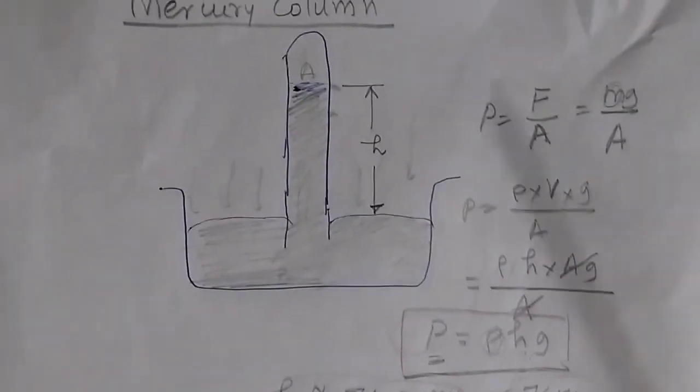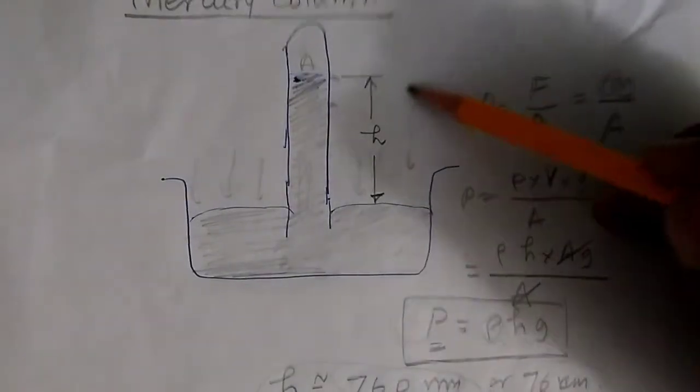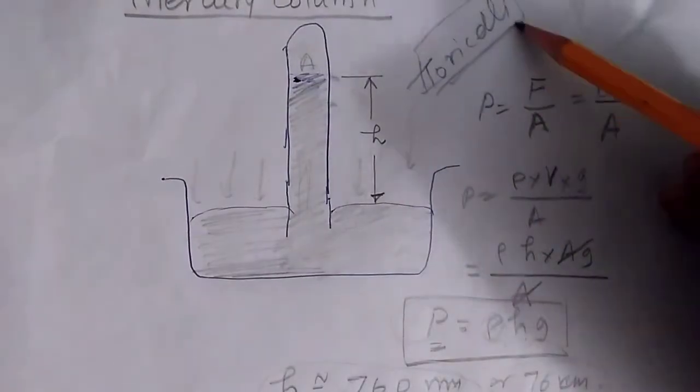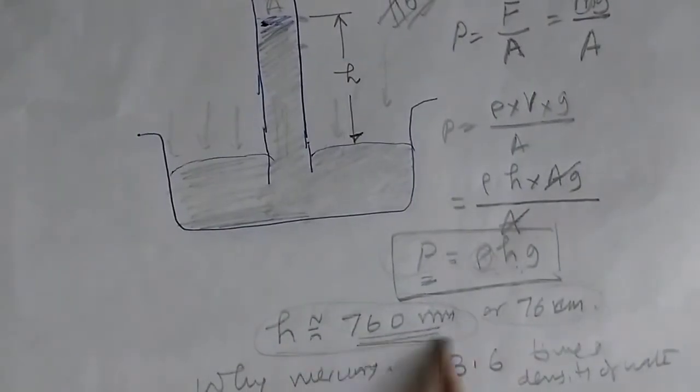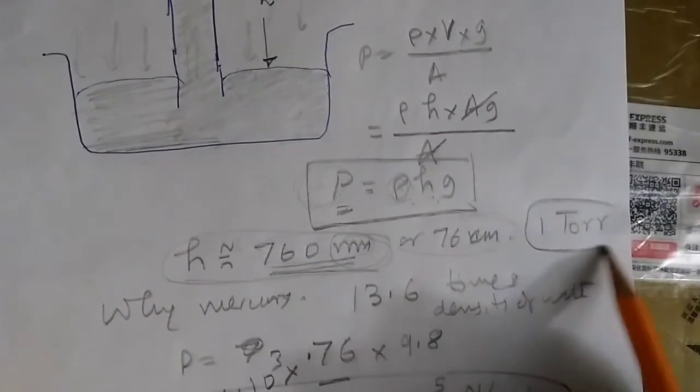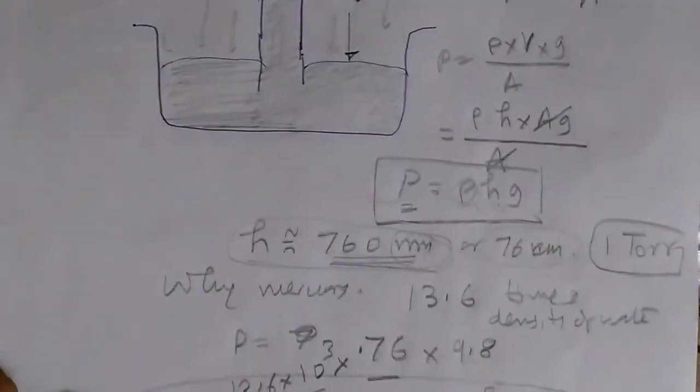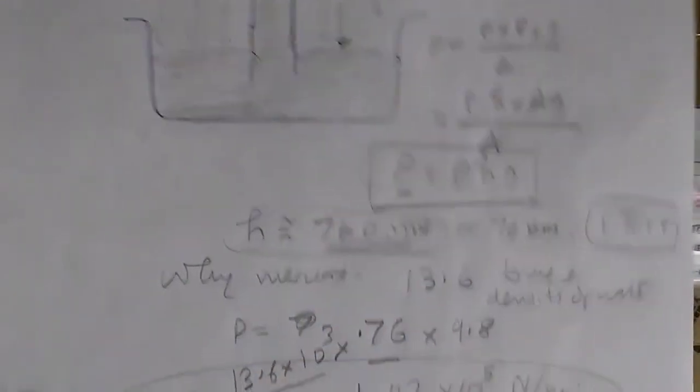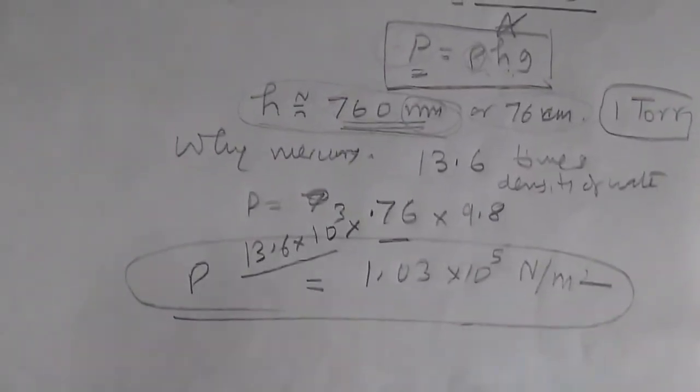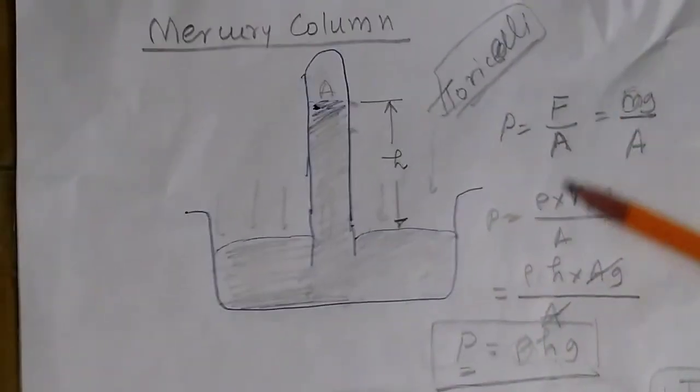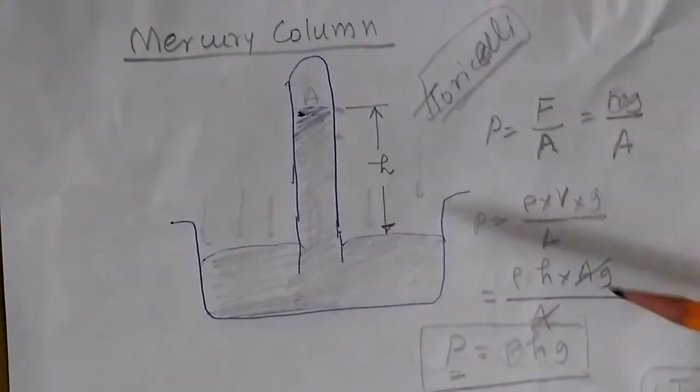The mercury column was invented by a scientist called Torricelli. And that is why this height of 760 mm, this unit, is also called 1 Torr. If we say 1 Torr atmospheric pressure, it also means 760 mm of mercury column or it is also equal to 1.03 into 10 to the power of 5 Newton per meter square. So these are some of the facts of the mercury column, the derivation of the formula that you can use and other things as well.